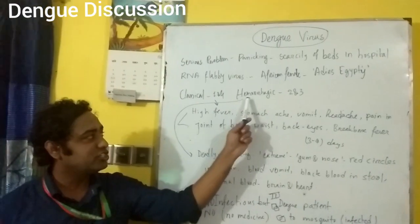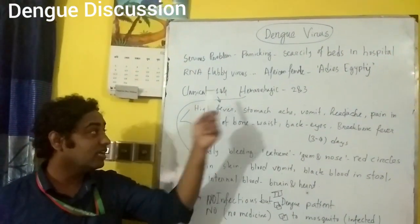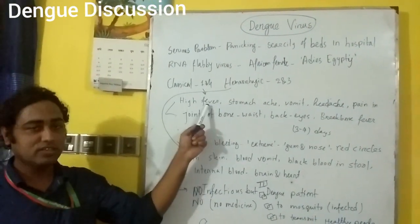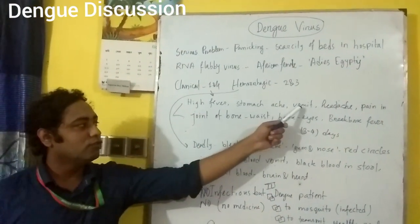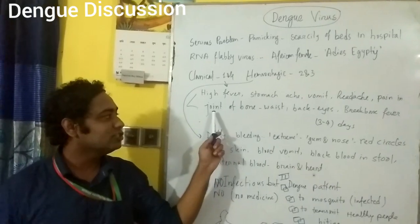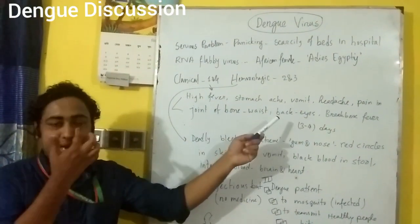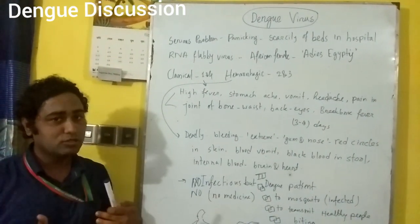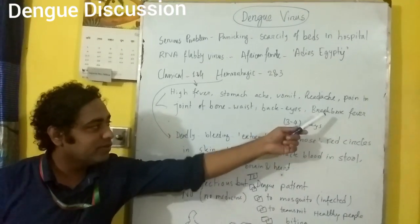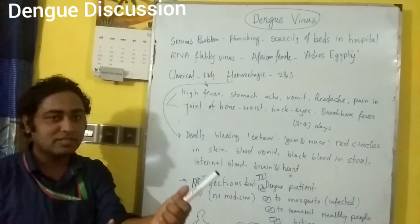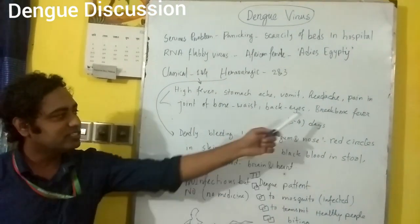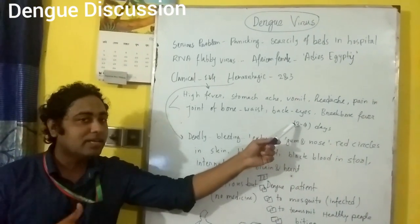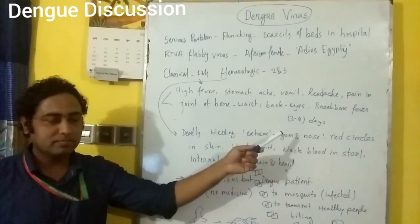The four types are: type one and type four, which are called classical dengue fever, and type two and type three, which are known as hemorrhagic dengue fever — this is really dangerous. Symptoms of classical dengue fever include high fever, stomach pain, vomiting, headache, and pain in the joints, bones, wrist, back, and behind the eyes. These are called break bone fever because the pain feels as if the bones are breaking. After three or four days, this fever can be recovered and the patient could become fine.